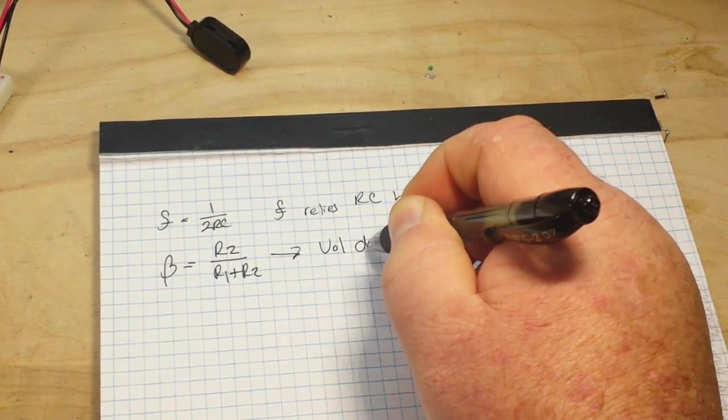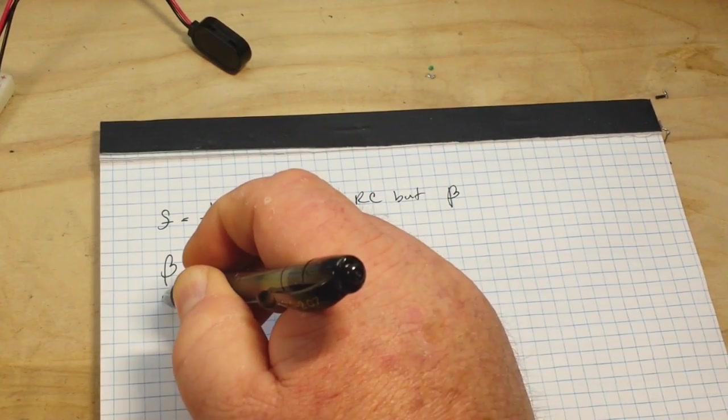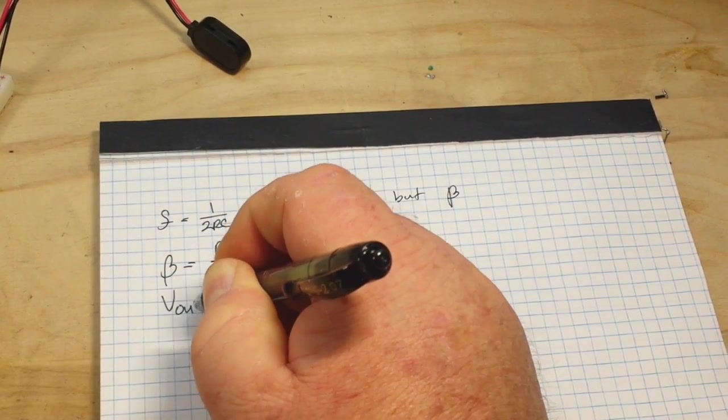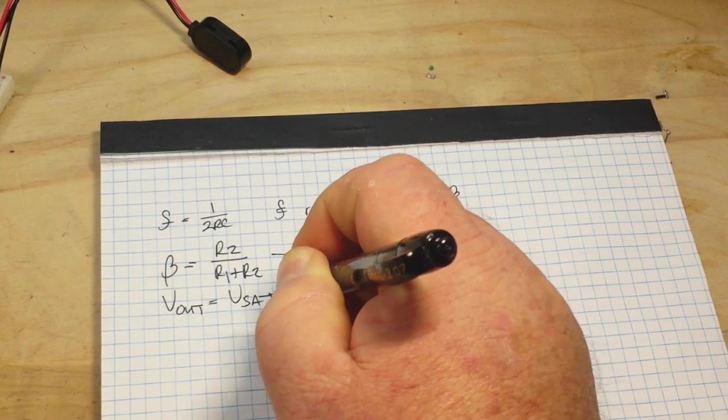Our feedback β is going to be R2 over R1 plus R2, and that is our voltage divider. That will be our feedback ratio, and we also need to know that Vout is equal to Vsat.